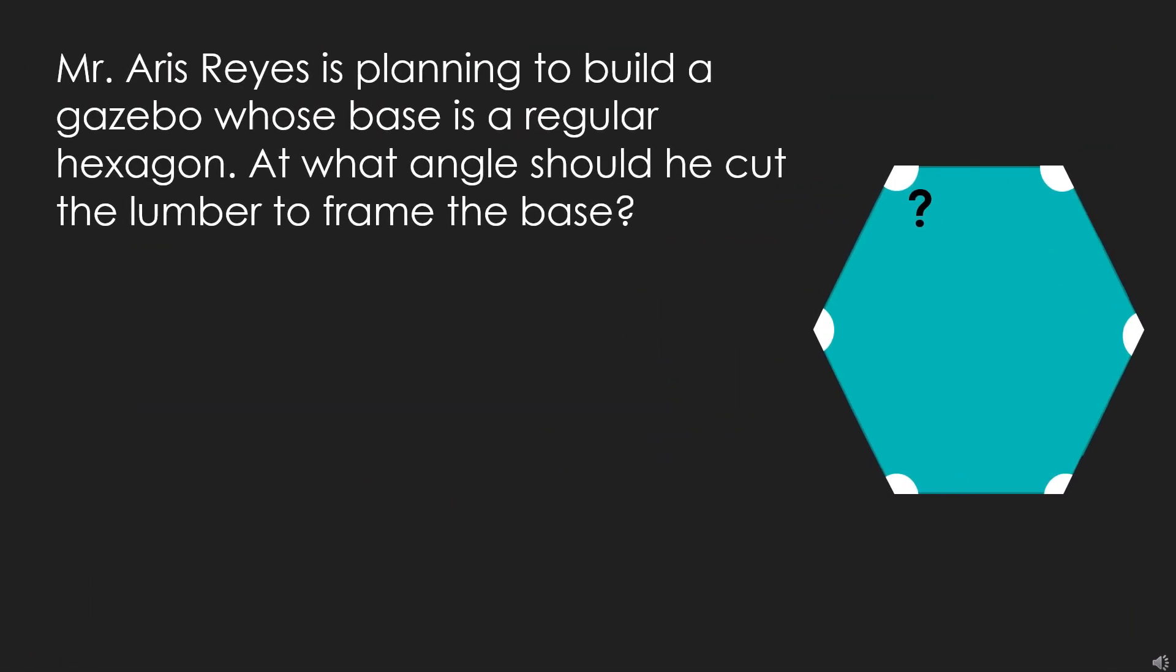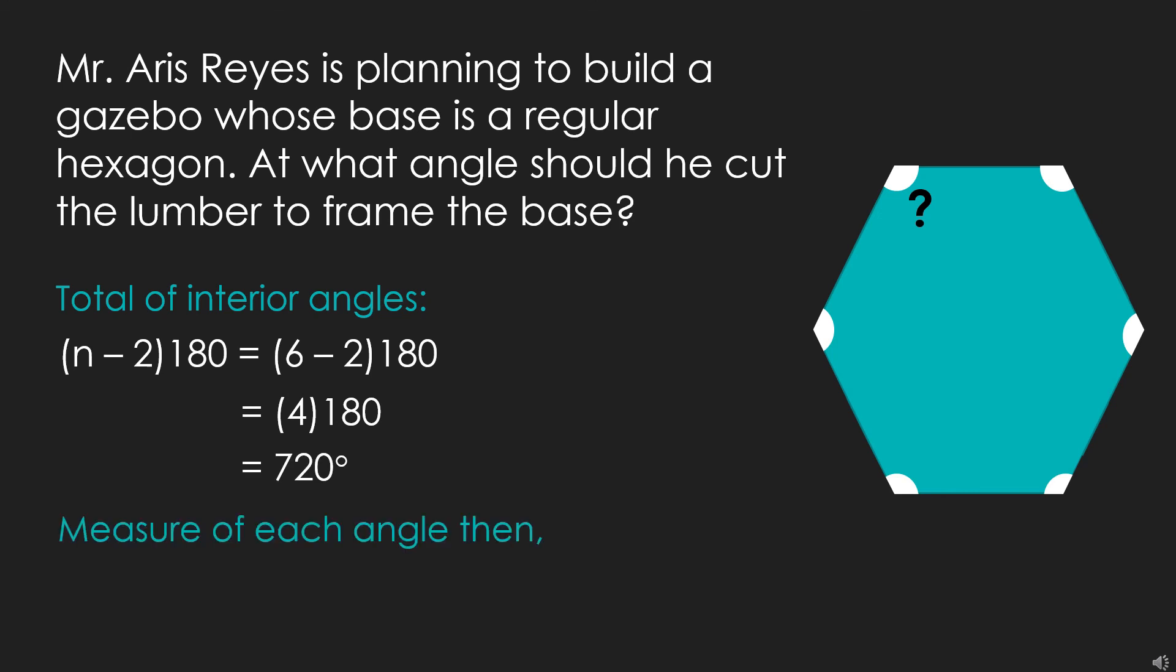Correct! The angle should be 120 degrees. The sum of the interior angles is 720 degrees. This is because from the formula (n - 2) × 180, we have (6 - 2) × 180, since hexagon has 6 sides. Then, of course, 6 minus 2, that would be 4, so we have 4 × 180, which will have an answer of 720 degrees. Now, to get the measure of each angle, we simply divide 720 degrees by the 6 sides, and this will mean that each side has an equal measure of 120 degrees. Thus, Mr. Reyes must cut the lumber on each corner at an angle of 120 degrees to make it a regular hexagon.